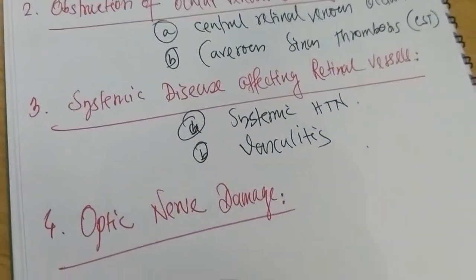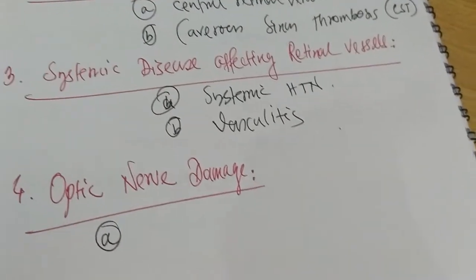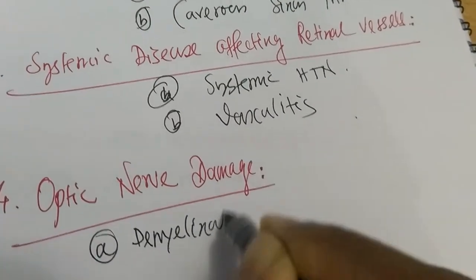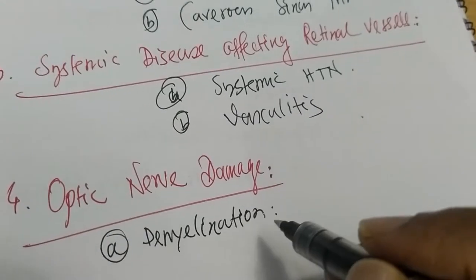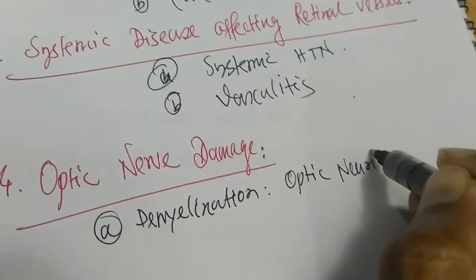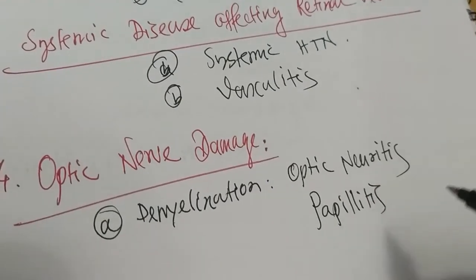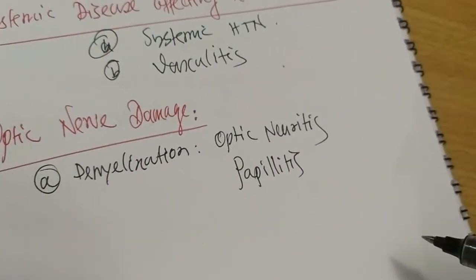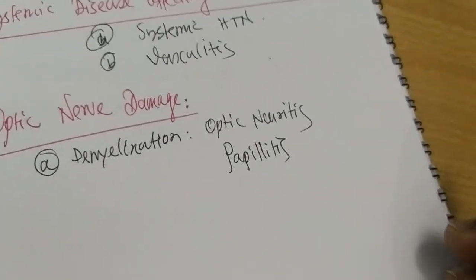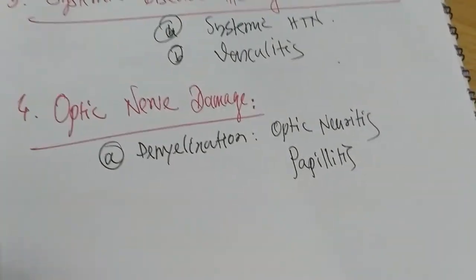The most important point I am writing here is demyelination of the optic nerve. The demyelination of the optic nerve may be due to optic neuritis or papillitis. There is a very good question: how to differentiate optic neuritis from papillitis — but I am not going to discuss that differentiating point here.